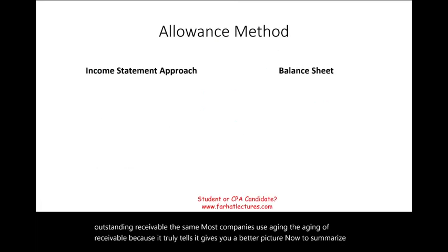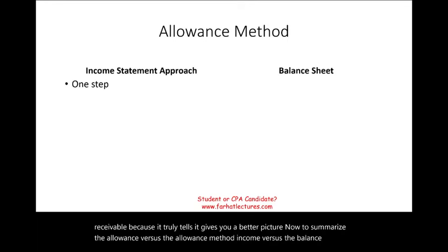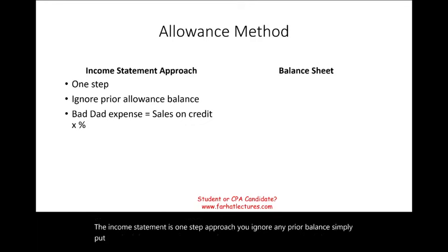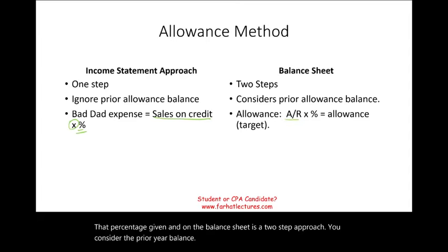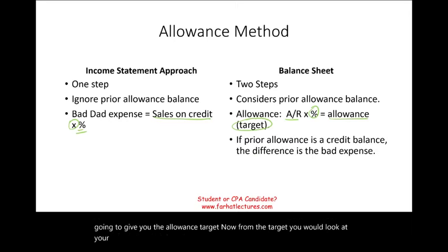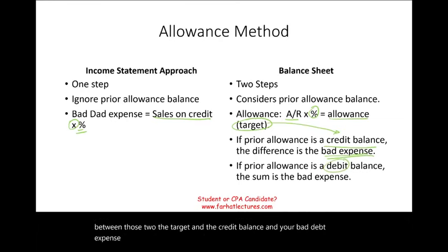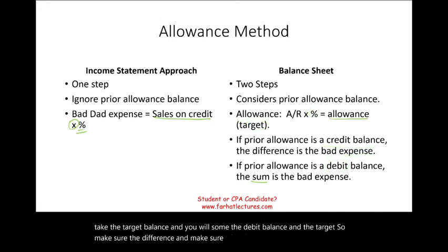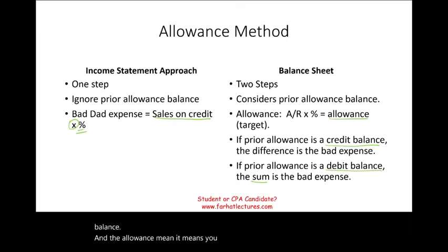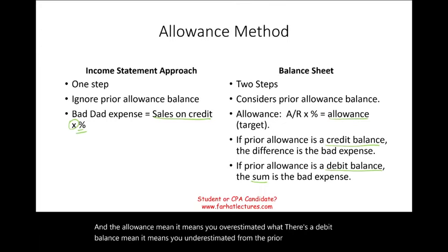To summarize: the income statement approach is a one-step process — you ignore any prior balance and compute bad debt expense as sales on credit times a percentage. The balance sheet approach is a two-step process — you find the target balance using account receivable times the percentage, then adjust for the prior year balance. If prior balance is credit, take the difference; if it's a debit, take the sum. A credit balance means overestimated; a debit balance means underestimated from the prior year.